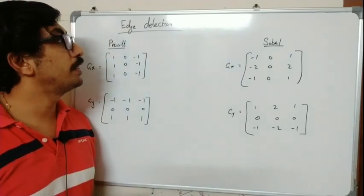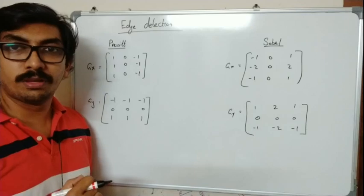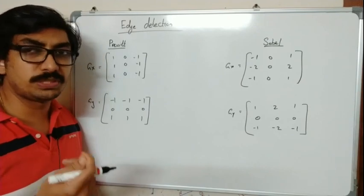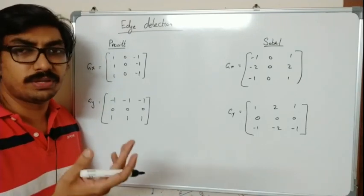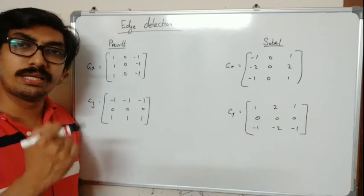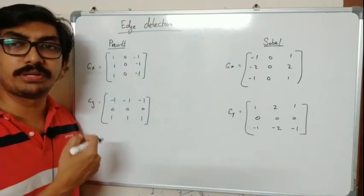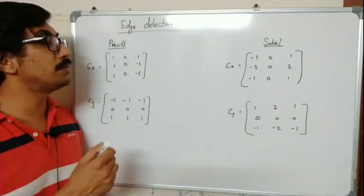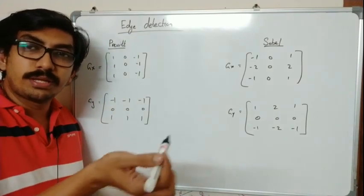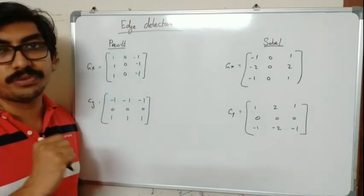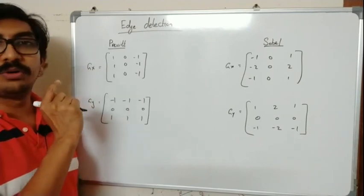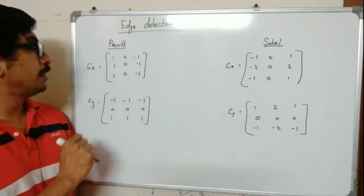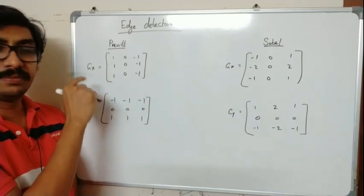Moving on, we will look at the Prewitt and Sobel filters. Both use a 3×3 kernel or mask. The reason we need a kernel is that in a continuous function you can directly use the first derivative, but for images we use discrete values. By convolution you can mimic the operation of differentiation. For that convolution you need a mask, and that is where Prewitt and Sobel use these kernels. Gx finds the change in the x direction and Gy finds the change in the y direction.